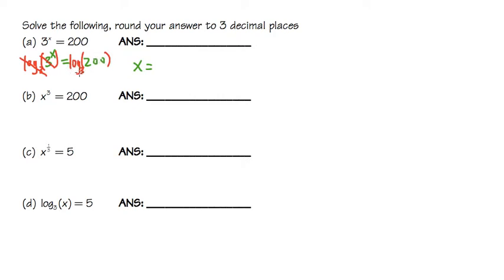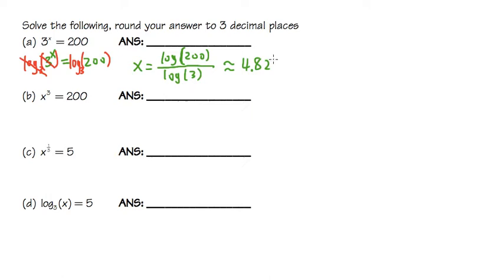If your calculator doesn't let you do log base 3, then what you have to do is write log of 200 divided by log of 3. When we don't put any number on the log, it means log base 10. Once you punch this into your calculator, the answer you end up with is 4.823 — that's the answer for the first one.